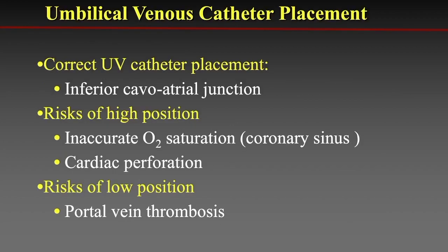We'll begin with umbilical venous or UV catheter placement. The correct position for a UV catheter is at or near the inferior cavoatrial junction. A catheter in a high position risks inaccurate O2 saturation sampling due to proximity to the coronary sinus, and because the atrial wall is relatively thin in infants, a high catheter can lead to atrial perforation. UV catheters in low position are at higher risk for portal vein thrombosis and intrahepatic perforation.